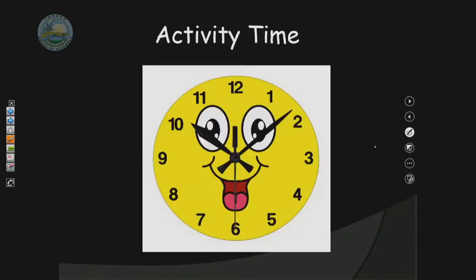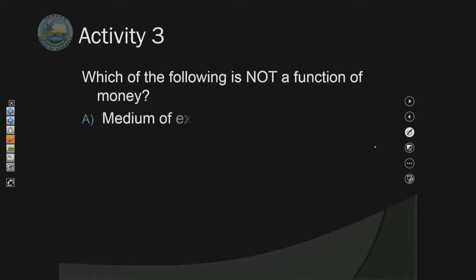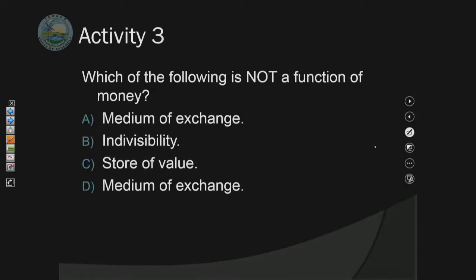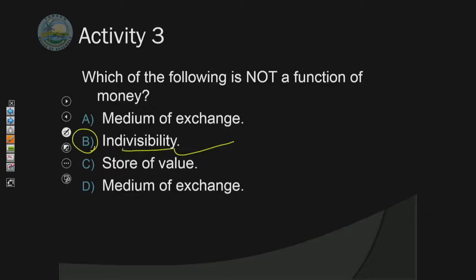Let's go into activity number three. Which of the following is not a function of money? A, medium of exchange; B, indivisibility; C, store of value; D, medium of exchange. If your answer is B, you are quite correct. Indivisibility means that money cannot be broken down, but we know money is divisible — a $100 bill can be broken down into five $20 pieces. All the others are actually functions of money.